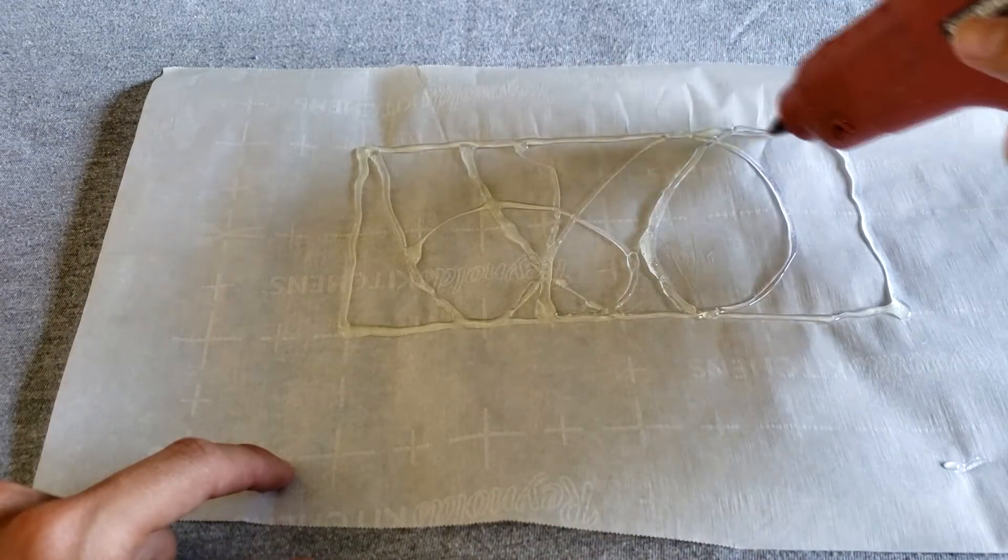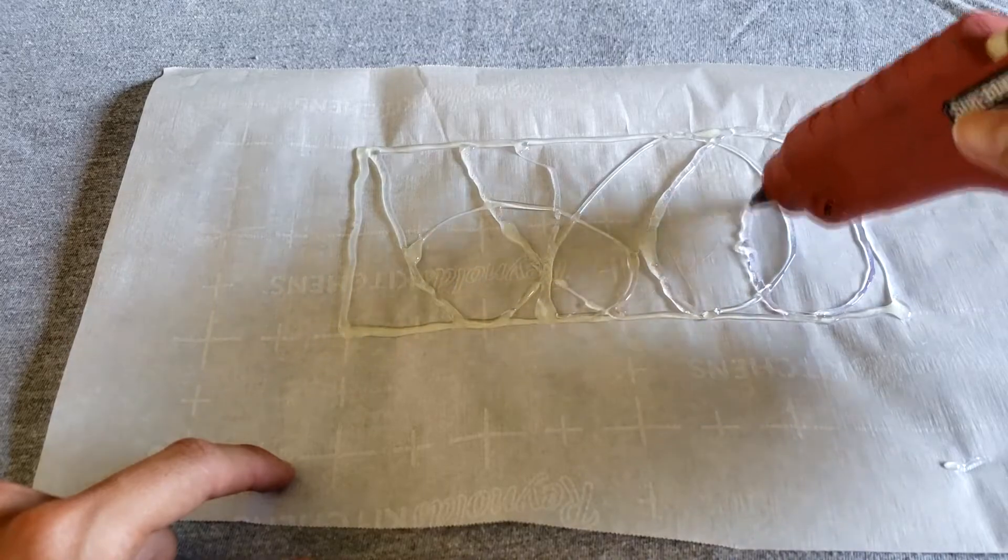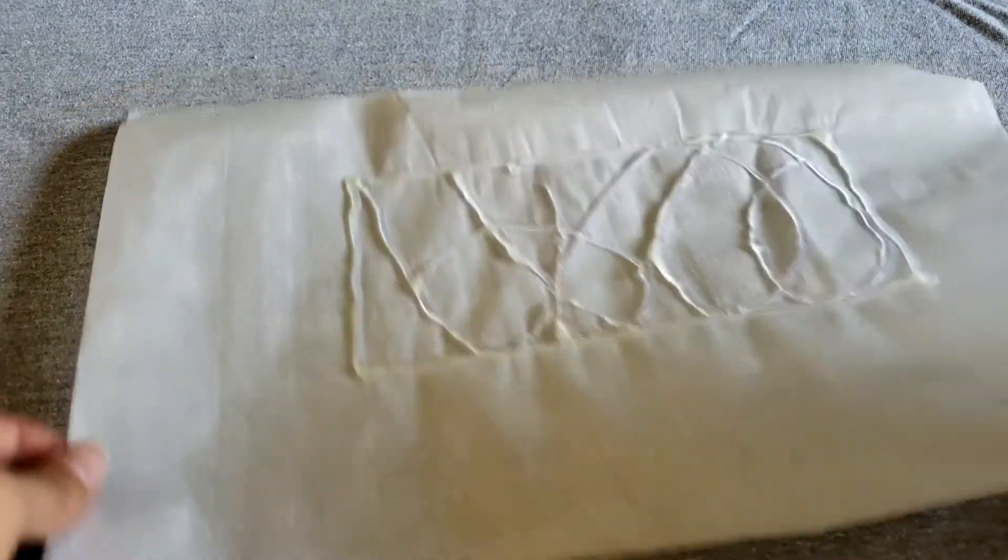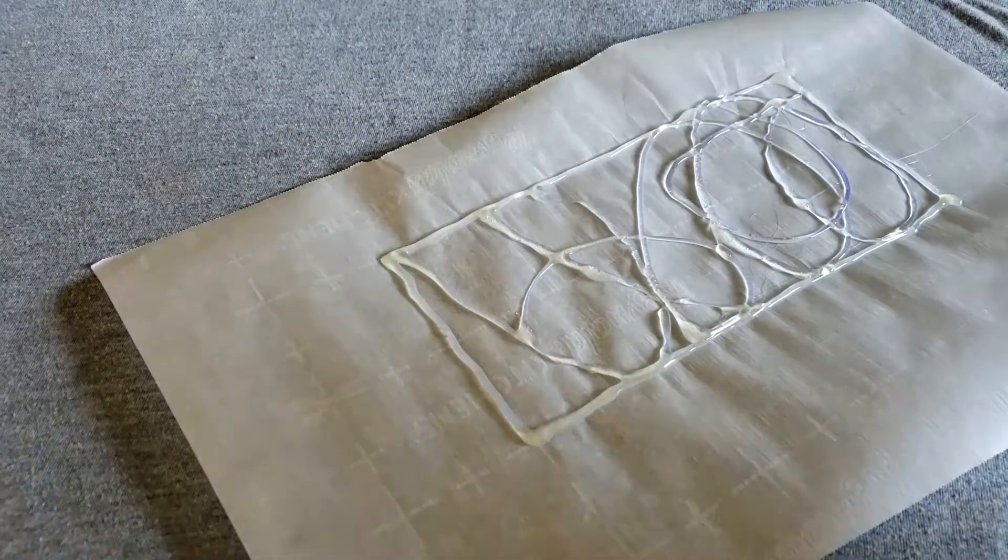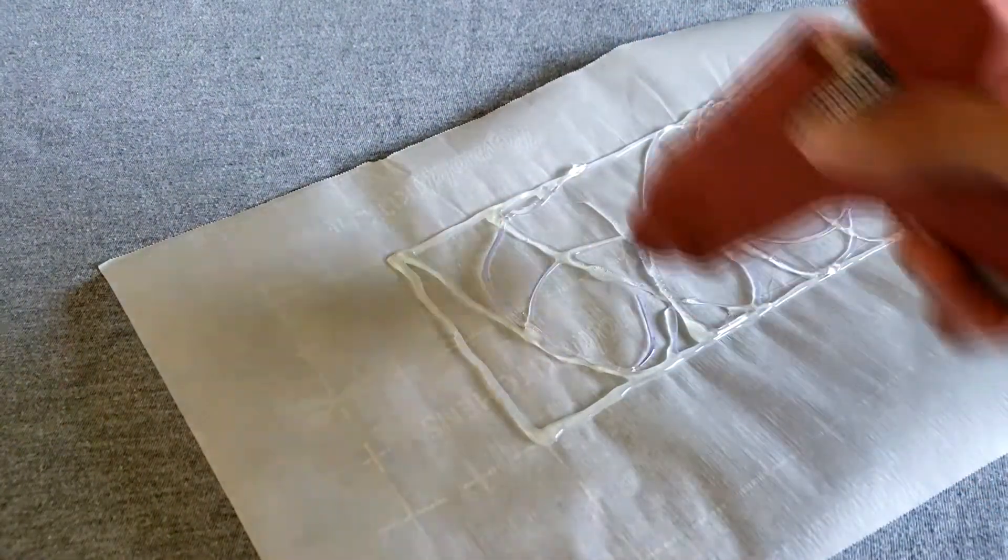What I would recommend is that any time that you create loop-de-loops or lines, make sure they connect to your rectangle so that it makes it easier when you're detaching it from the parchment paper.